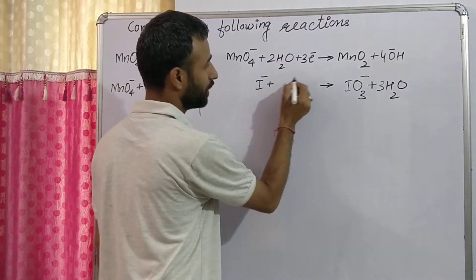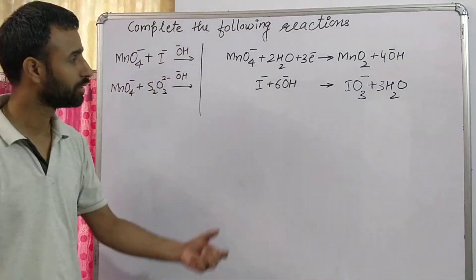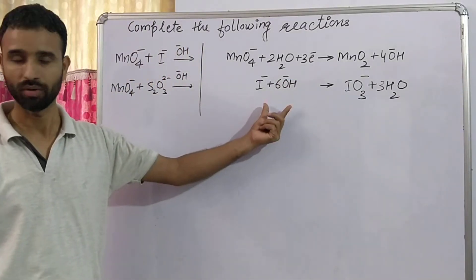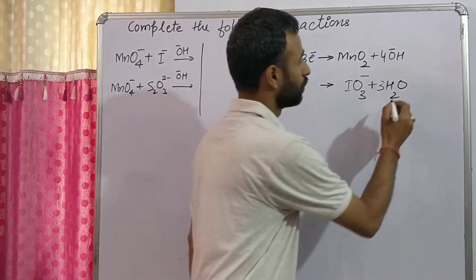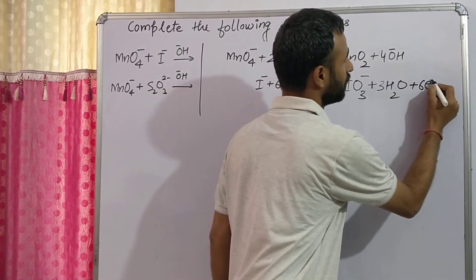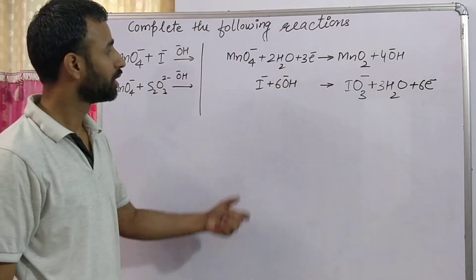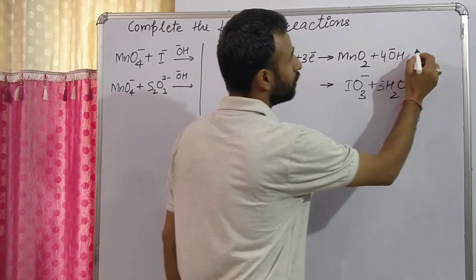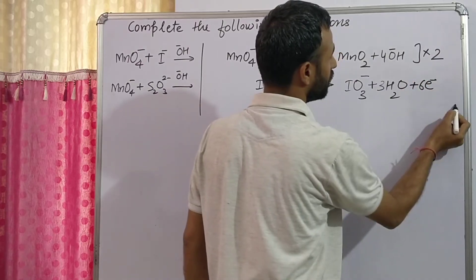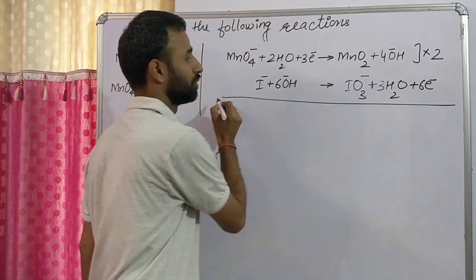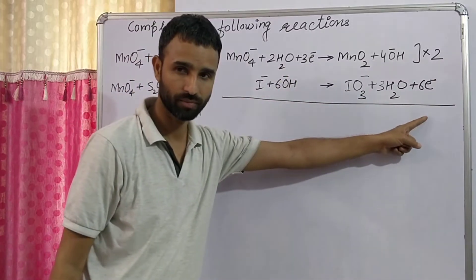So we add three H₂O and double the number of OH⁻ ions to the opposite side. So I⁻ and six OH⁻ on this side gives seven negative charge total, and one negative on the other side, so we add six electrons. Now we multiply the first equation by two to balance the electrons.